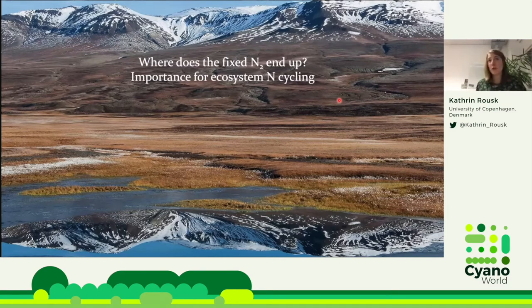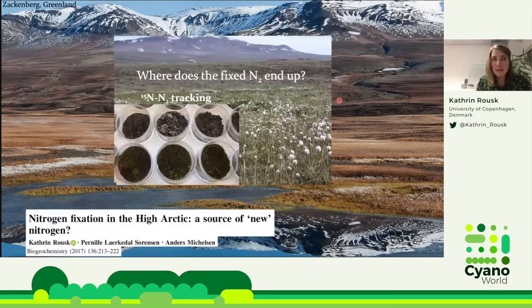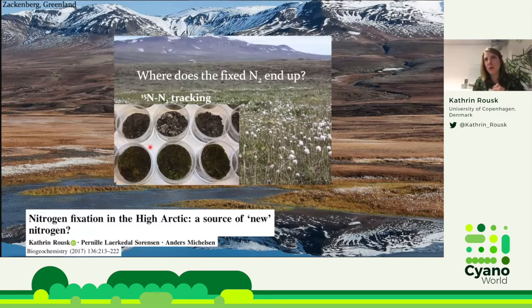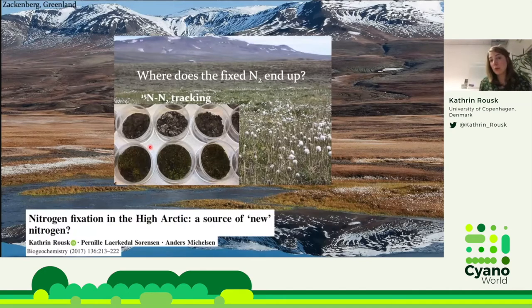Is this important for the ecosystem? Is the nitrogen that is fixed actually available to the rest of the ecosystem — to other plants in the same system? To test that, we went to the far north — Greenland, Svalbard — where we collected small ecosystem components, different plants and mosses. We incubated those with 15N-labeled dinitrogen and tracked this label into different ecosystem components to see if this fixed nitrogen that went through the cyanobacteria is taken up by other plants.